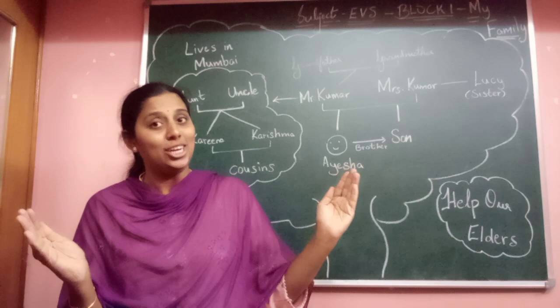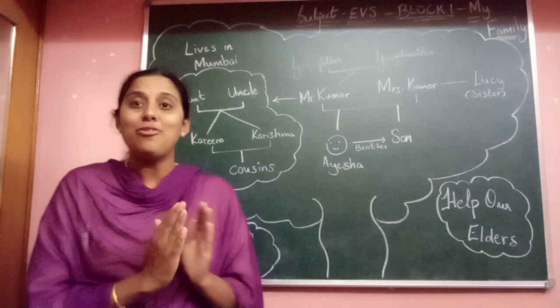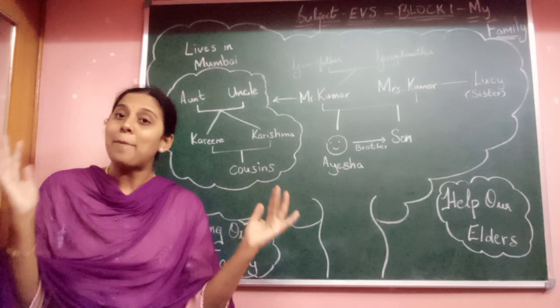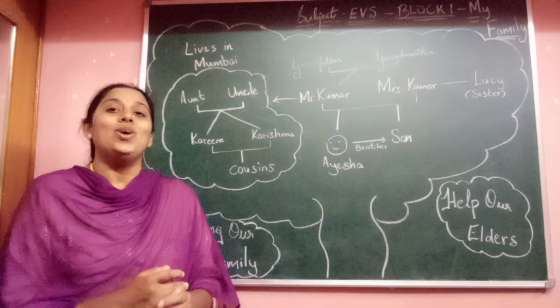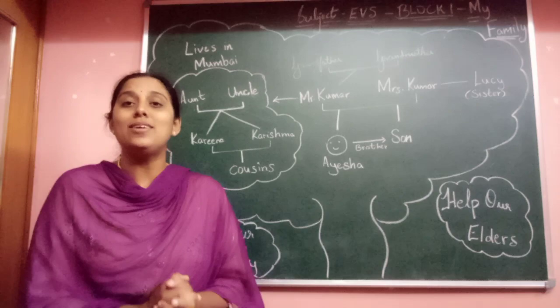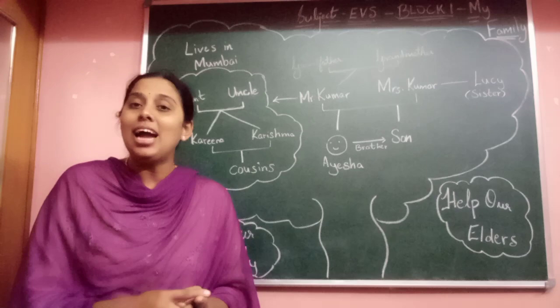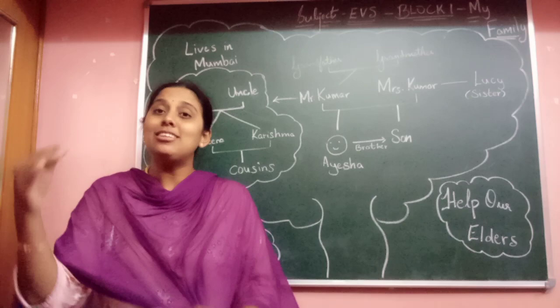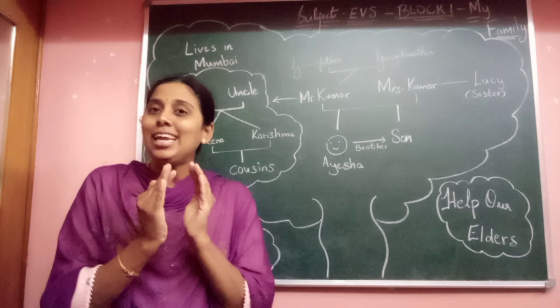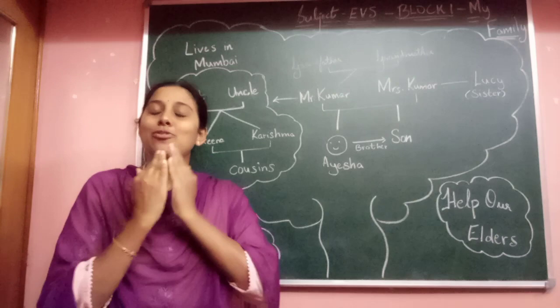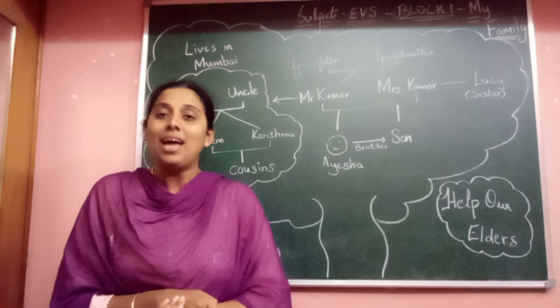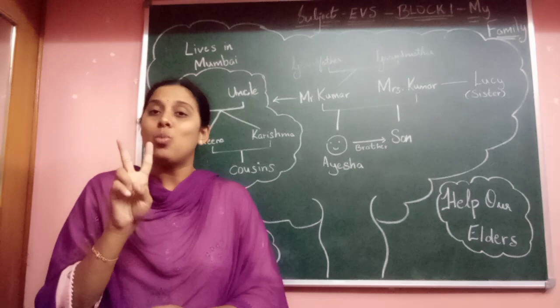A small family is known as a nuclear family, and a big family is known as a joint family. In a joint family, parents, grandparents, uncles, aunts, and cousins all live together. A nuclear family means living with only parents and brothers and sisters. So a family can be of two types: nuclear family or joint family.